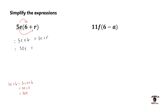Remember, with our 5e times r, since all of these terms are unlike, we're simply going to combine them together. This will be our expression in its simplified form. Remember that we don't simplify unlike terms — so that will be our answer.